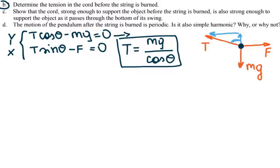If I plug in cosine theta, T is equal to mg divided by cosine of 60, and cosine of 60 is equal to one half, so that gives me 2mg.